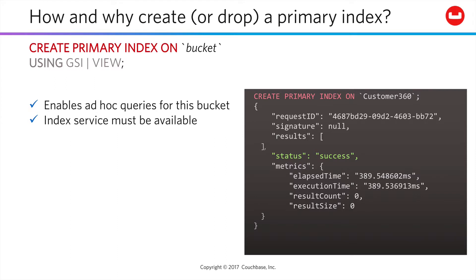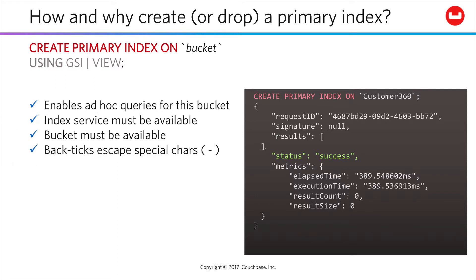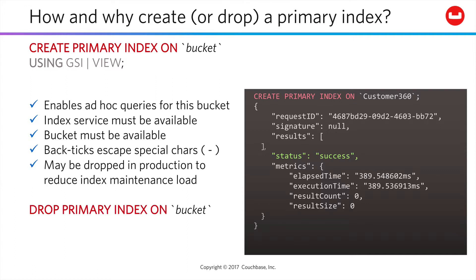To create a primary index, the index service must be available, as well as the bucket to be indexed. If the bucket name has special characters, you use backticks as an escape character in N1QL. In production, you may want to drop a primary index because you don't want the maintenance overhead of continuously indexing all fields within your documents, so you simply drop the primary index.